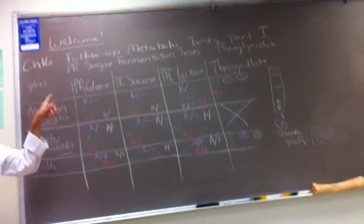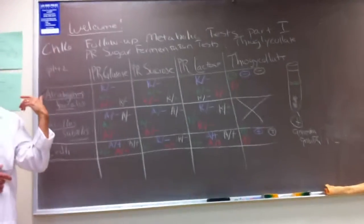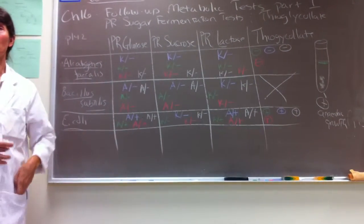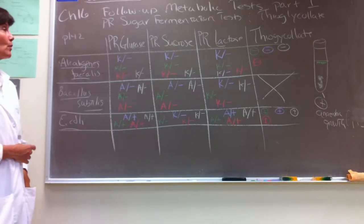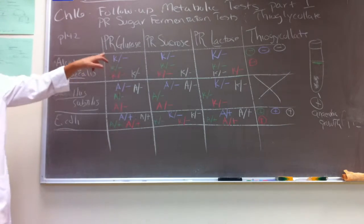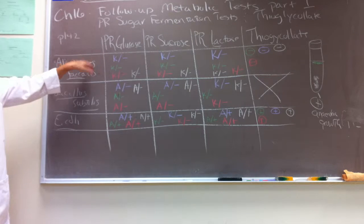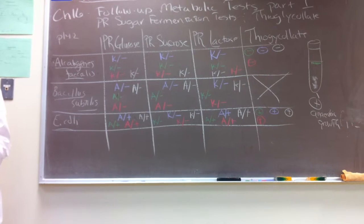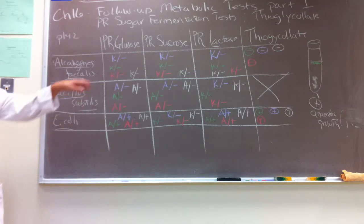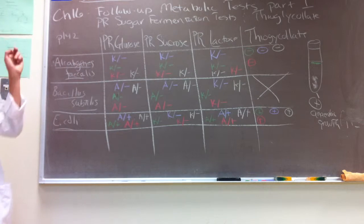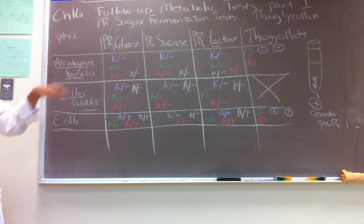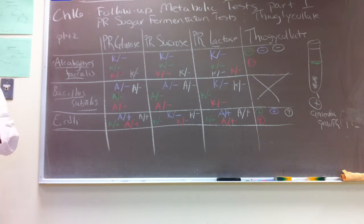Alkalogenes fecalis couldn't ferment any of the sugars. If we think about it, if we were inoculated into these guys, that's how we react - we can't survive by fermentation alone. So one possible hypothesis here is that Alkalogenes fecalis could be a strict obligate aerobe - can't carry out fermentation, can't survive by fermentation, lacks the enzymes to carry out fermentation. So what tests could we run to verify that hypothesis?